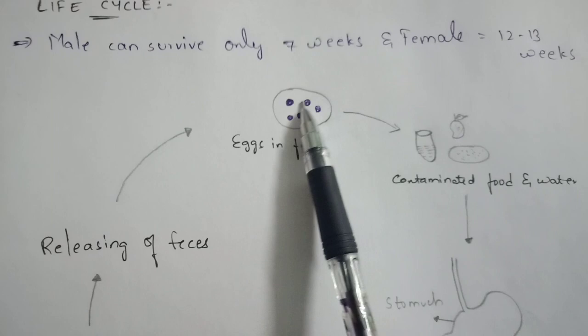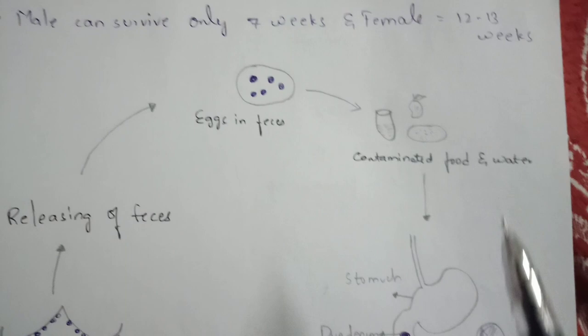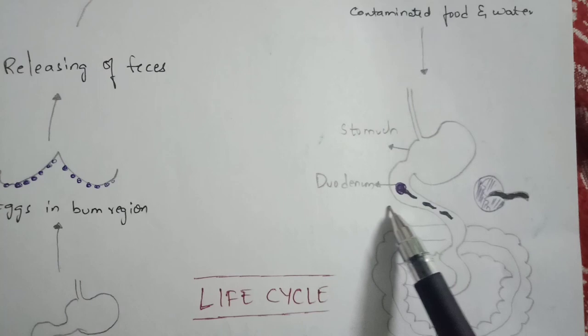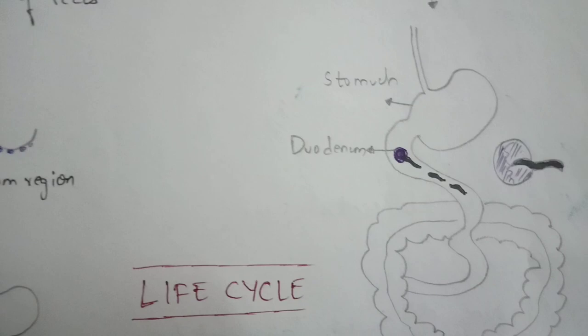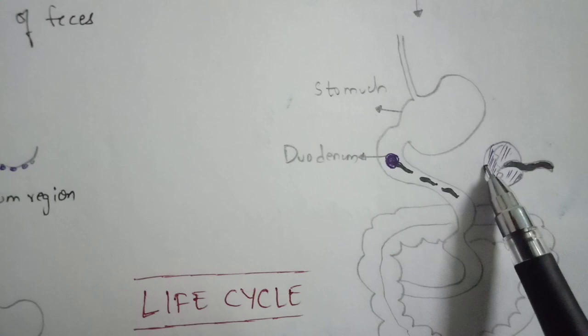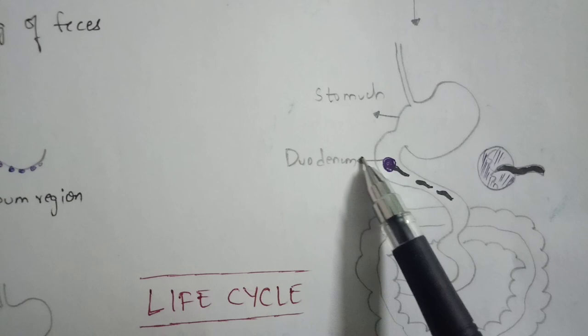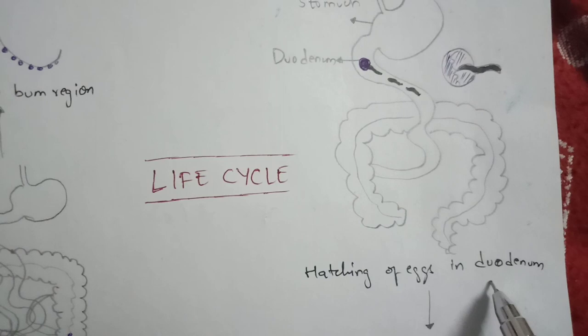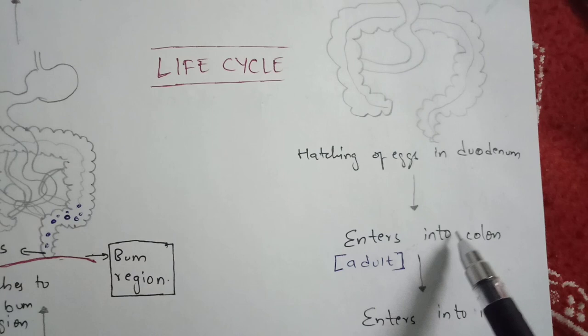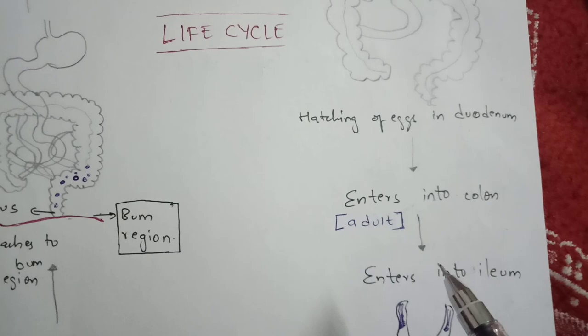In the life cycle, eggs present in contaminated food and water are ingested by humans. The eggs enter the stomach and from there pass into the duodenum, where hatching of the eggs takes place, releasing larvae. These worms then travel to the small intestine, where growth takes place. After growth, they enter the colon, where they become adults capable of copulation.